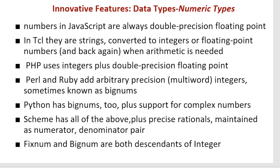Numbers in JavaScript are always double-precision floating point. In TCL, numbers are strings, and are converted to integers or floating-point numbers when arithmetic is needed.